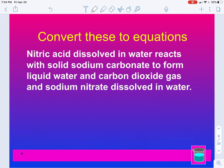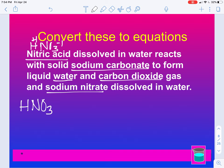Let's try the next one. Nitric acid dissolved in water reacts with solid sodium carbonate to form liquid water and carbon dioxide gas and sodium nitrate dissolved in water. So we need to find our compounds. We have nitric acid, sodium carbonate, carbon dioxide and sodium nitrate. So nitric acid is HNO₃. H is a plus one, nitrate is a minus one. So we have HNO₃. Reacts, that's a plus sign. Form is an arrow. And is a plus sign.